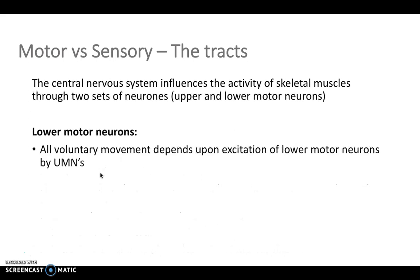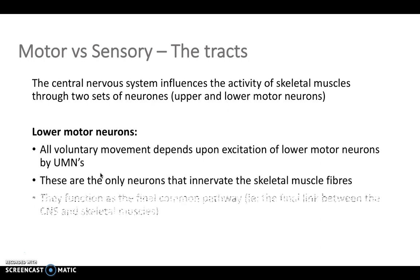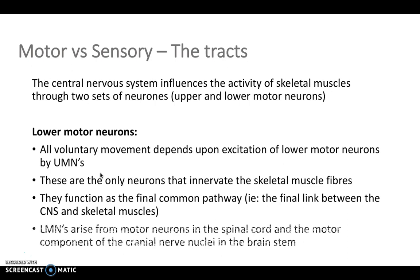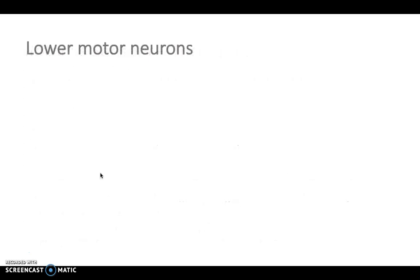There are also lower motor neurons. These take over from the upper motor neurons and receive excitation from them, and they're the only neurons that innervate the skeletal muscle fibers. So they function as the final common pathway — in other words, the final link between the nervous system and the skeletal muscle, the effector.